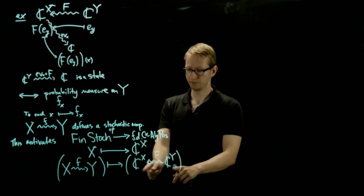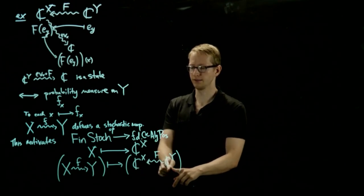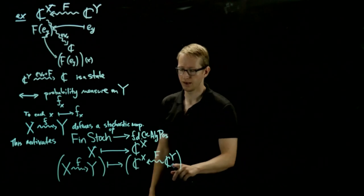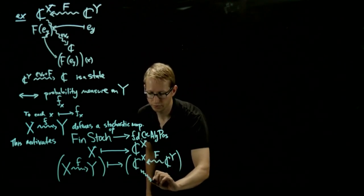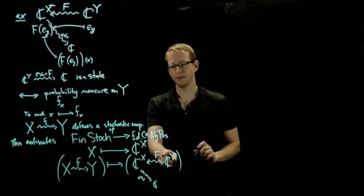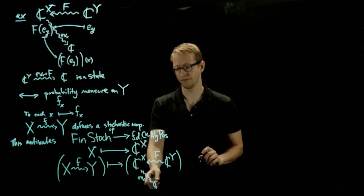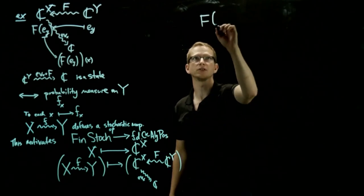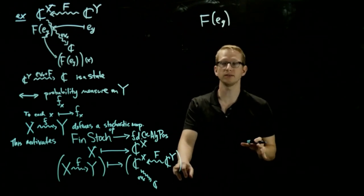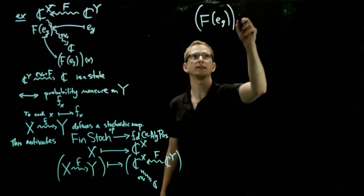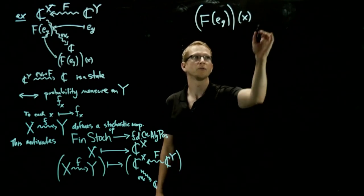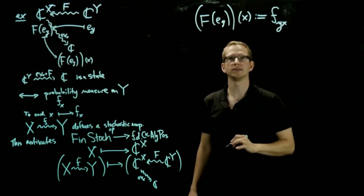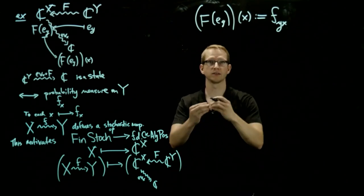We already know that this map is going to be completely determined by either what it does on the domain or the codomain. If we look at this map and evaluate at x, we can set F(E_y) evaluated at x to be equal to the probability associated with going from x to the element y in the stochastic map f.